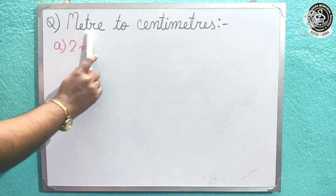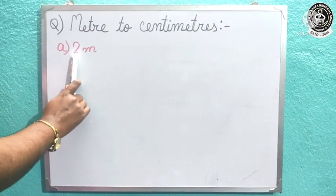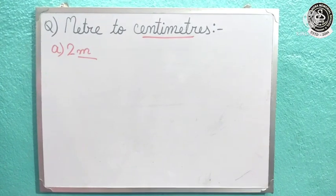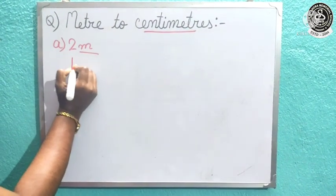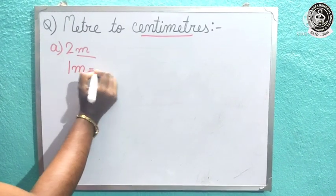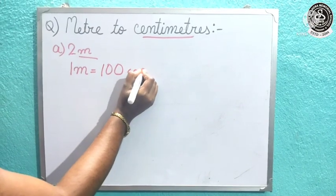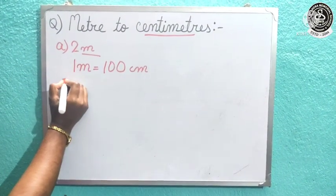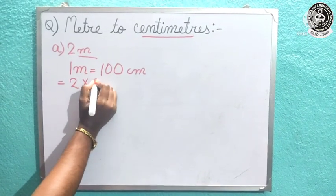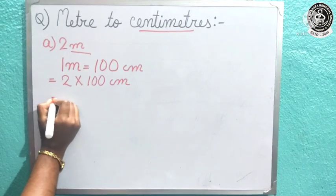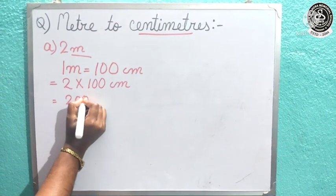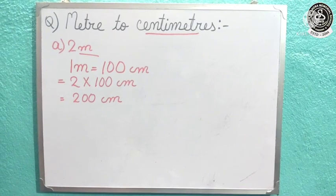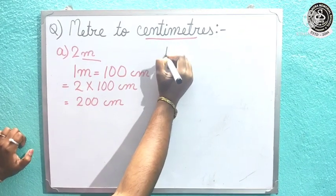So today we are going to convert meter to centimeter. Here is our first question: 2 meter, and we have to convert it into centimeter. Just now we have seen that 1 meter is equal to 100 centimeter. So 2 meter — we will multiply 2 with 100, and after multiplication we will get 200 centimeter.